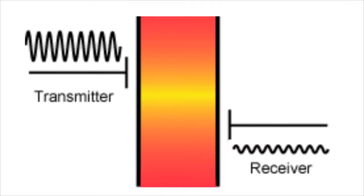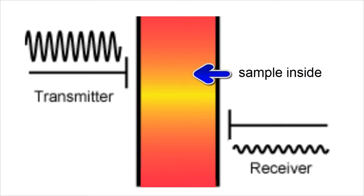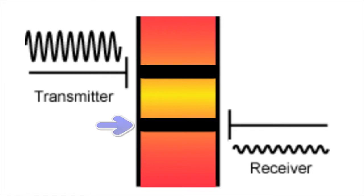This diagram shows how C4D works. Here we have the walls of our capillary or tubing, and our sample inside. This is a transmitter electrode which applies a high-frequency electromagnetic signal. This is passed onto the sample, and further along the tube or capillary, a receiver electrode picks up that signal.